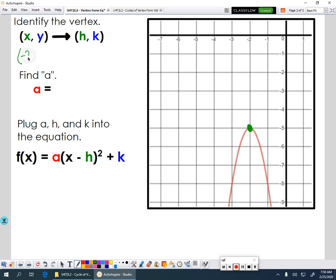So my x value is negative 2. My y value is negative 5, which means your h value is negative 2 and your k value is negative 5.